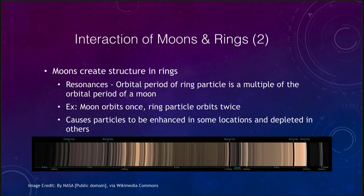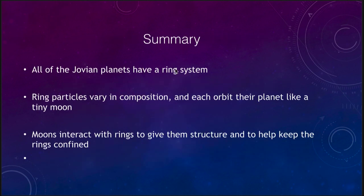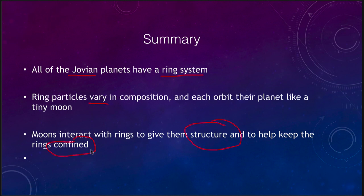All Jovian planets have a ring system, but ring particles can vary in composition and each orbits the planet like a tiny moon. The moons interact with the rings to give them structure and to help keep the rings confined — it is because of the moons that we see the structure, the well-defined small rings, and the well-defined edges of other rings. That concludes our lecture on planetary rings. We'll be back next time for another topic in astronomy — have a great day, everyone.